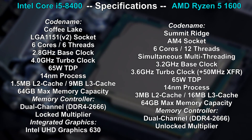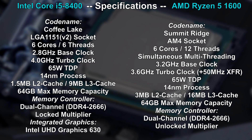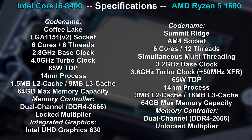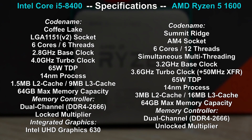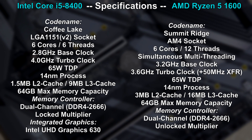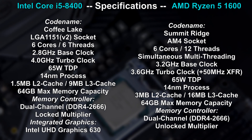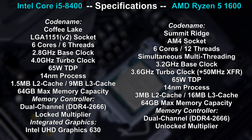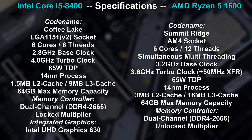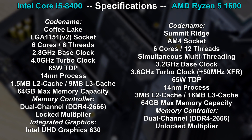Right away I want to point out that the i5-8400 comes with a locked multiplier, therefore doesn't allow for overclocking, whereas the Ryzen 5 does indeed come with an unlocked multiplier. At the time of this video there are only Z370 motherboards out for the new Intel Coffee Lake platform. Z370 is meant for overclockers and you typically have to pay a little more for such a board, but such a board isn't needed for an 8400 since that CPU doesn't support overclocking anyway.